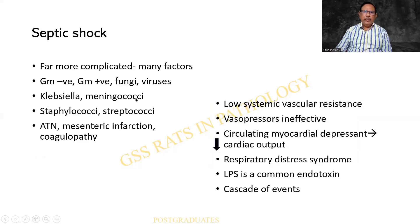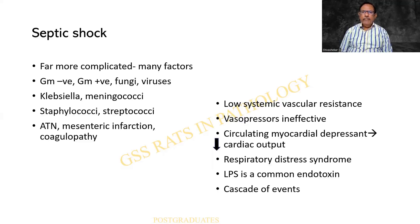Gram-negative organisms can be Klebsiella and Meningococci; gram-positive include Staphylococci and Streptococci. Ultimately they can result in various organ changes such as acute tubular necrosis, mesenteric infarction, and widespread coagulopathy. In this condition there is a low systemic vascular resistance, resulting in peripheral pooling of blood — there is no loss of blood but peripheral pooling. The vasopressors are inactive. In shock, there are two kinds of substances: vaso-exciter material and vaso-depressive material. The vasodepressors are more active and vasoconstrictors are ineffective, resulting in vasodilatation and peripheral pooling.